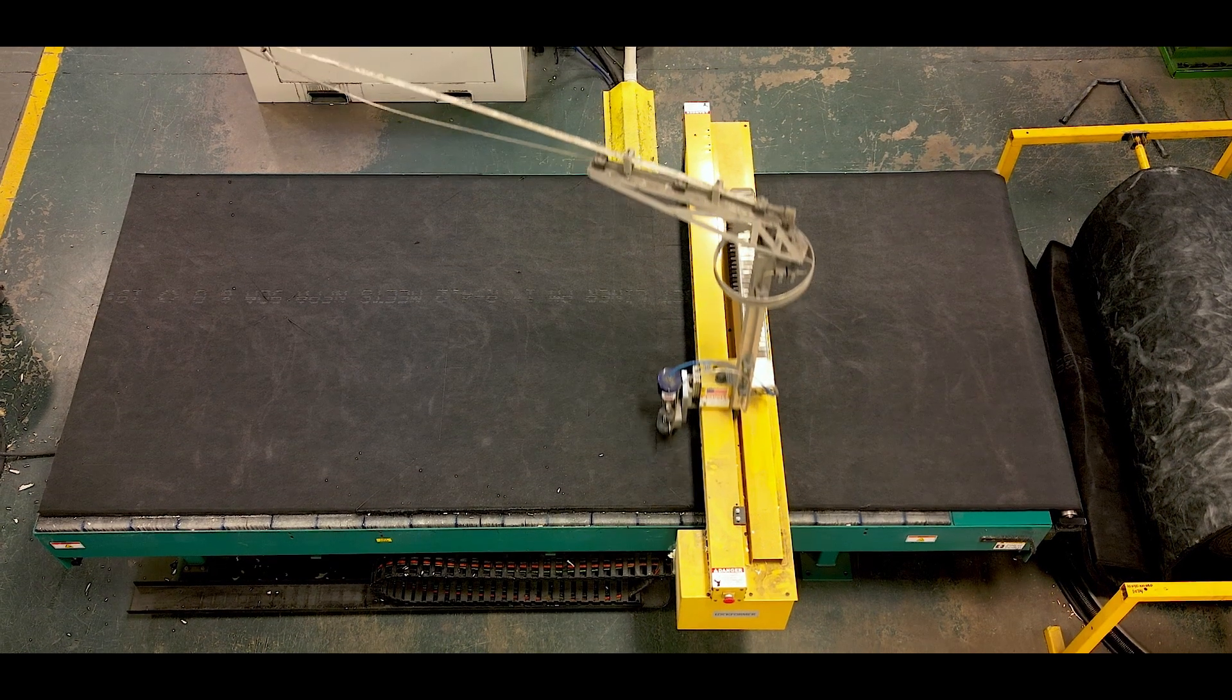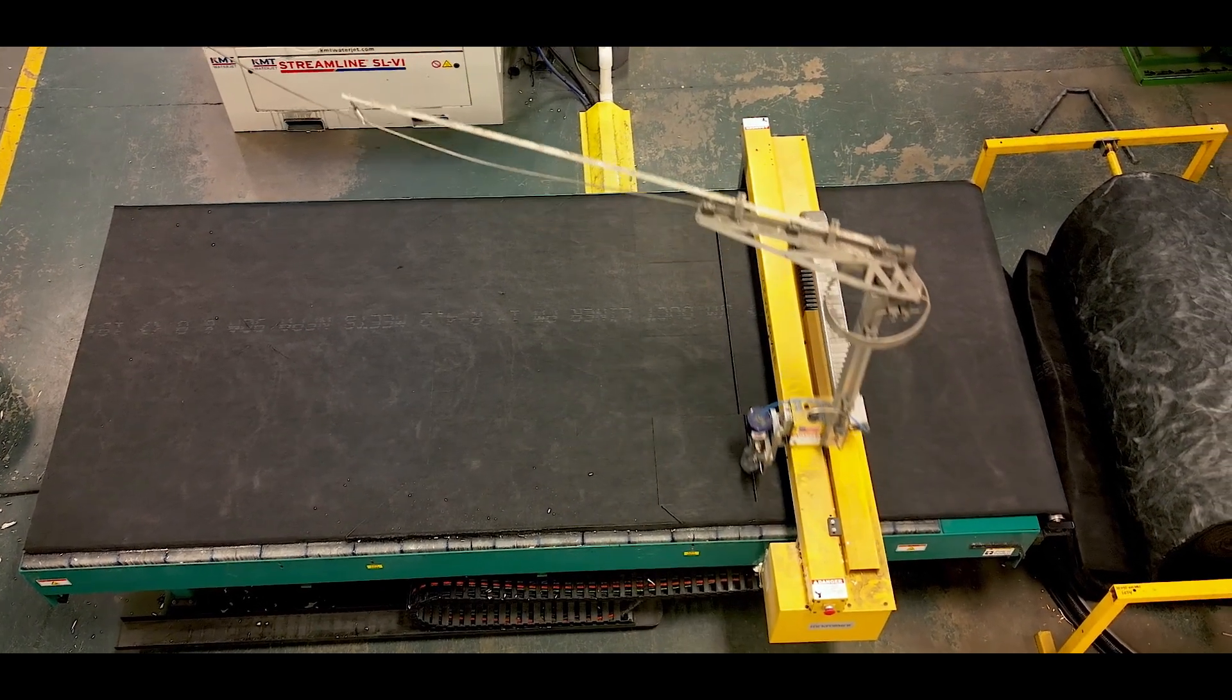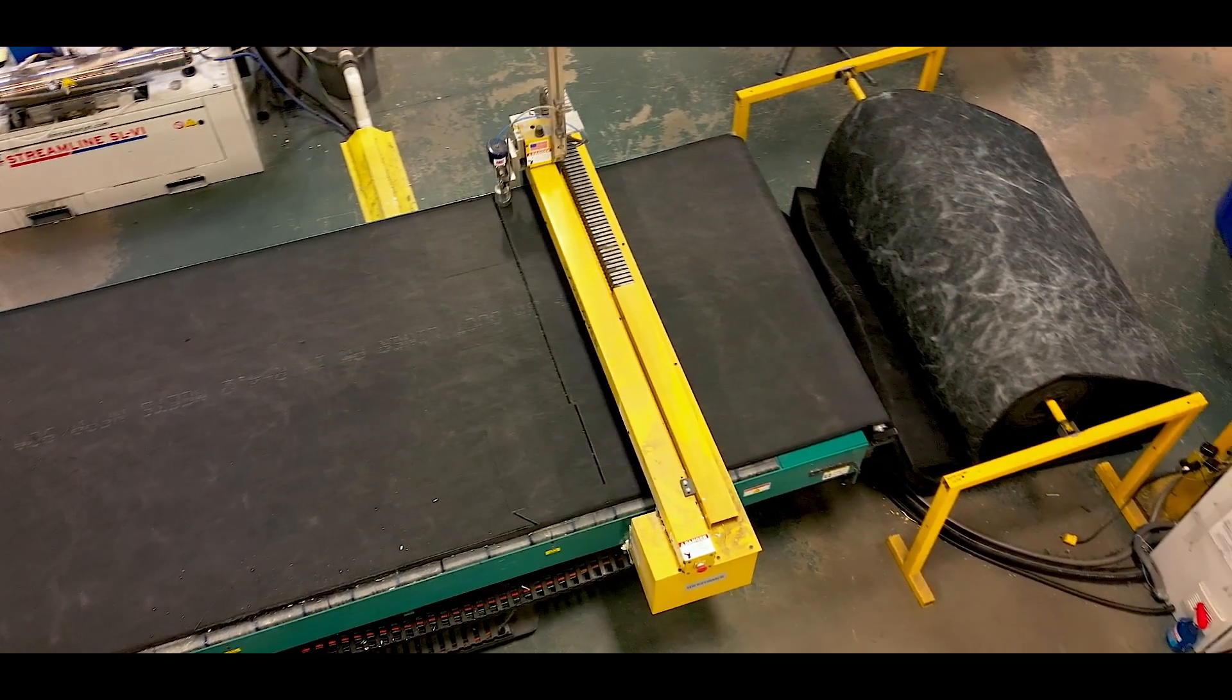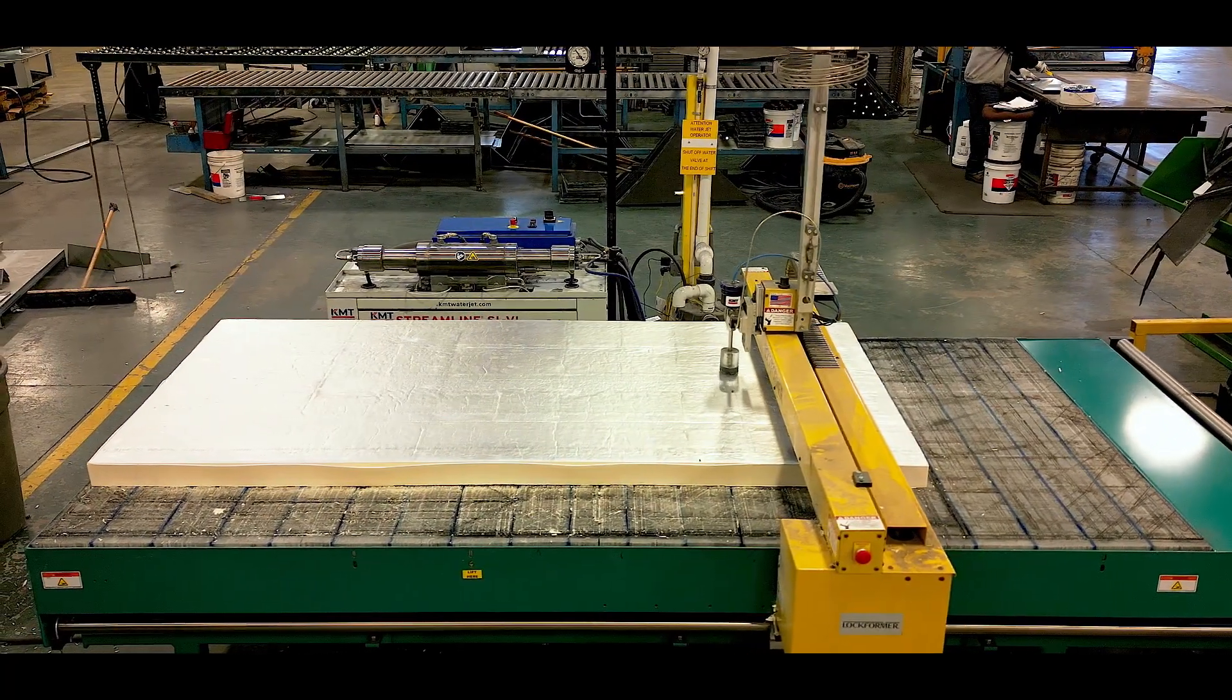Whether you require precise insulation shapes for square to rounds, radius elbows, or transitions, the Lockformer Vulcan 1600 Waterjet Cutting System can fabricate insulation fittings for about one-tenth of what it costs to buy them.